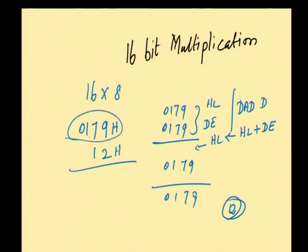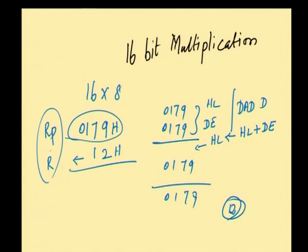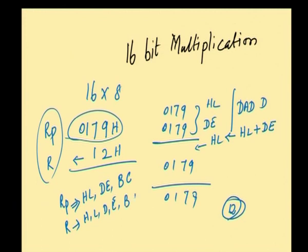The 16-bit data, that is the multiplicand, should be loaded in a register pair, and the multiplier should be loaded in any one of the general purpose registers. In 8085, the register pairs are three: HL register pair, DE register pair, and BC register pair. General purpose registers are six: H, L, D, E, B and C. If you are selecting two register pairs, the remaining register pair can be used as an 8-bit register. This is the concept of multiplying 16-bit by 8-bit — the 16-bit multiplicand is added with the multiplier times.